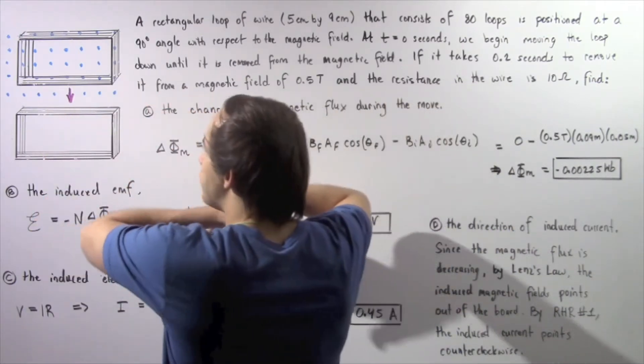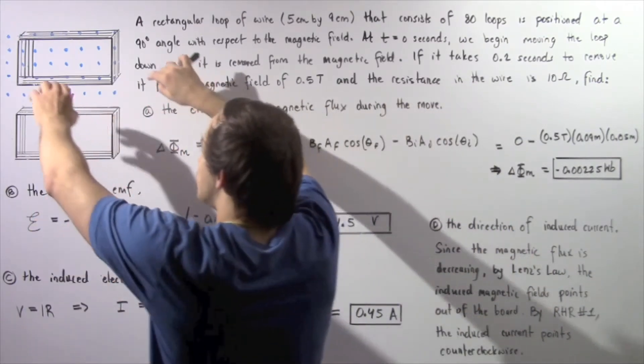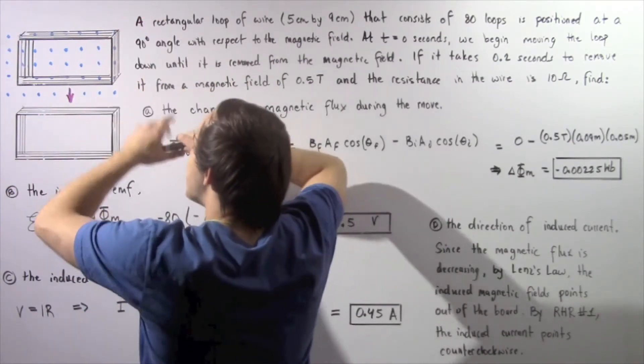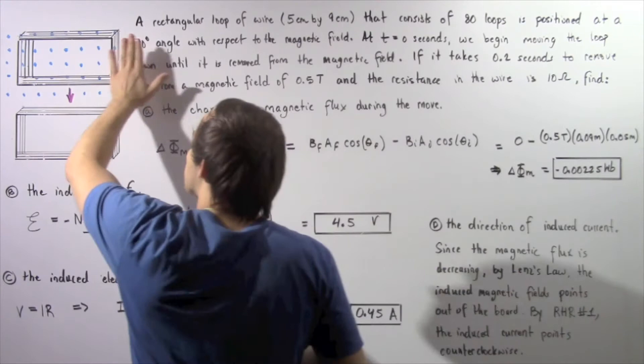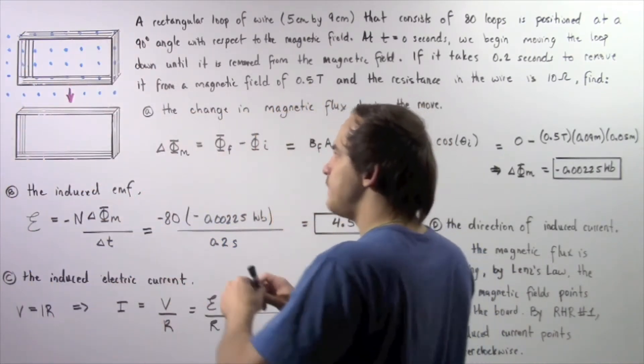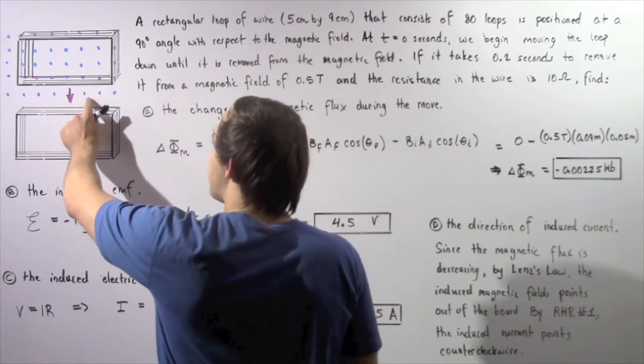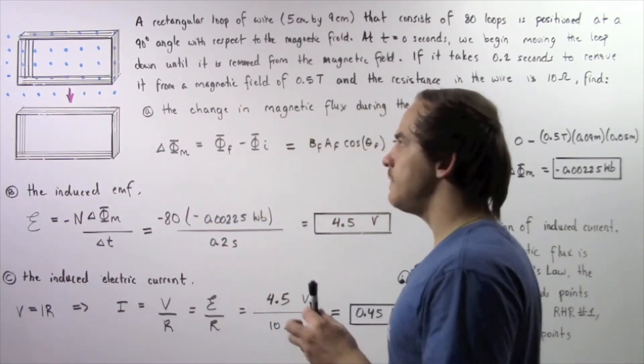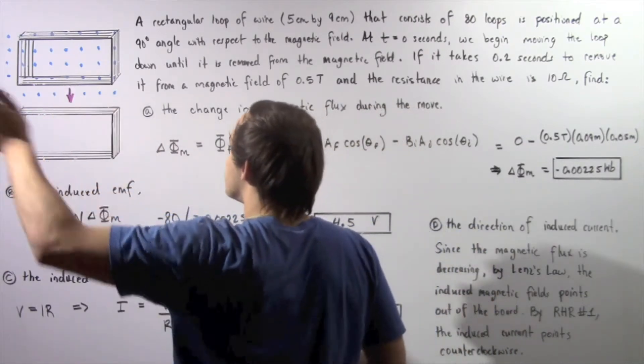So let's look at the following diagram. Initially we have the following loop of wire. So we have 80 such loops that are positioned perpendicularly with respect to our external magnetic field which is given by the following dots. And these dots represent our magnetic field lines that point out of the board.